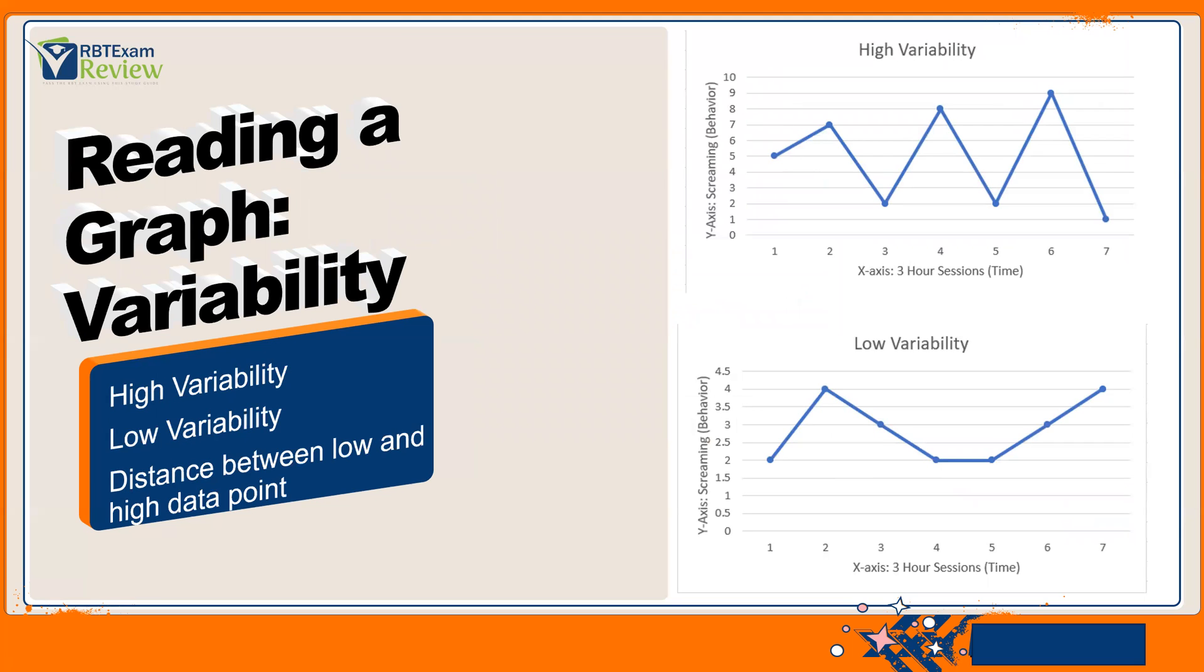Okay, second thing, variability. This is going to let you know how consistent is the data. How stable is this data? Is it all over the place? Is it very unpredictable? Or is it very, very consistent? Is it very predictable? So, you're going to have high variability and low variability. Now, you can say it's moderately high, it's moderately low. But in general, you're going to refer to it as high and low to keep it simple as an RBT.